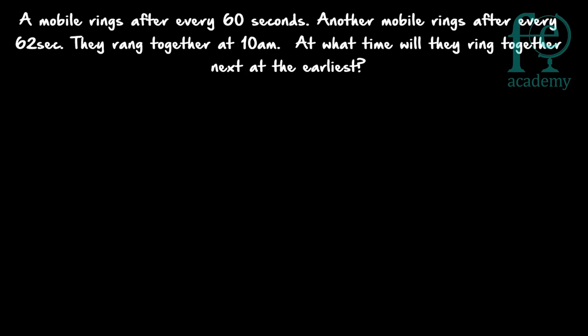The second question: a mobile rings after every 60 seconds, another mobile rings after every 62 seconds. They rang together at 10 am. At what time will they ring together next, at the earliest? To solve this, you need to find the lowest common multiple of 60 and 62 — that gives the instant at which both mobiles will ring together.